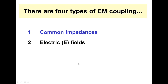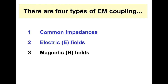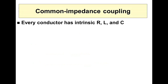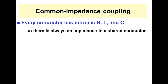We have four types of electromagnetic coupling: common impedances, electric fields, magnetic fields, and electromagnetic fields. Let's start with common impedance coupling. Every conductor — whether it's an intentional conductor like a wire or trace, or a piece of metal in a chassis — has intrinsic resistance, inductance, and capacitance. Even superconductors have exactly the same inductance and capacitance that they would have as ordinary wires or cables, which means they always have radio frequency impedance. Any time we share a conductor between two or more circuits, we're sharing that impedance, and that's what causes the problems.